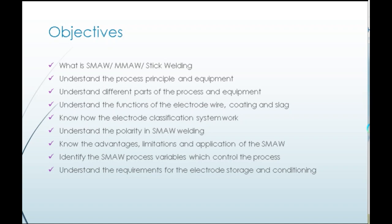The objectives of today's training are: What is SMAW, MMW, or stick welding? Understand the process principle and equipment. Understand different parts of the process and equipment. Understand the functions of the electrode wire, coating and slag. Know how the electrode classification system works. Understand the polarity in SMAW welding. Know the advantages, limitations and applications of SMAW. Identify the SMAW process variables which control the process.